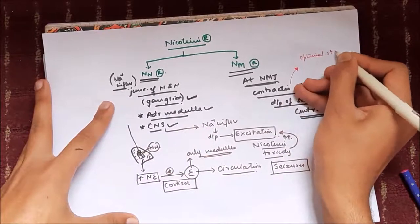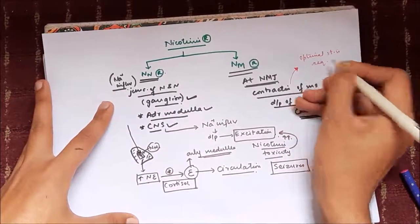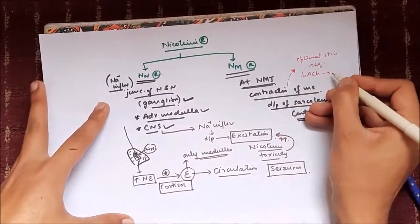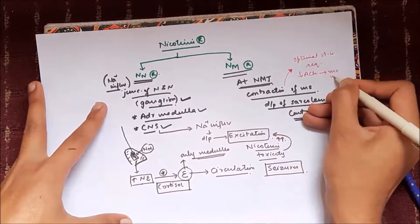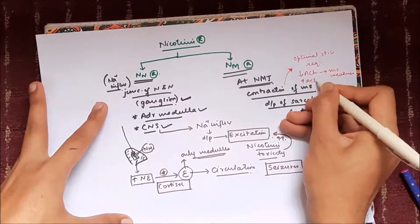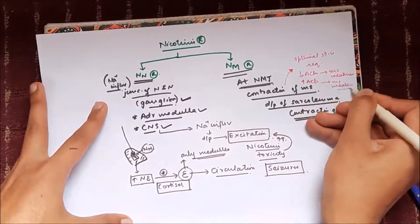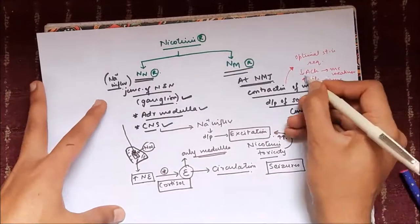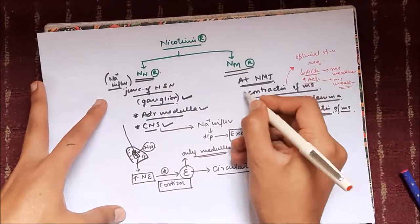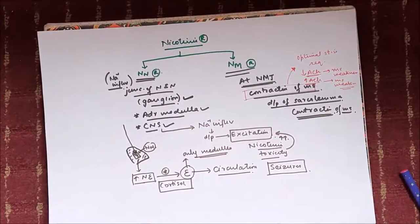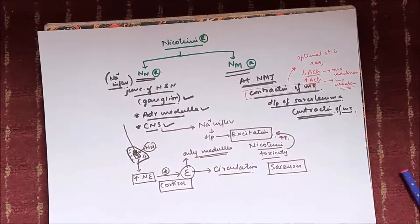For contraction of muscle, it is important to note that an optimal stimulus is required. If less acetylcholine is present that will result in muscle weakness, and if more acetylcholine is present that will also result in muscle weakness. These are two similar conditions which will be differentiated later on.